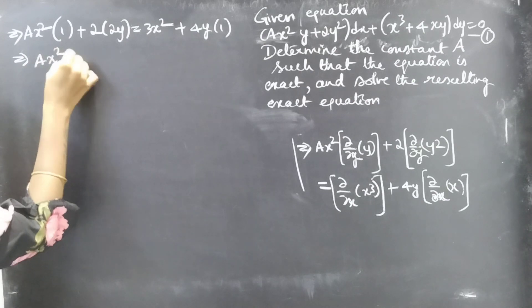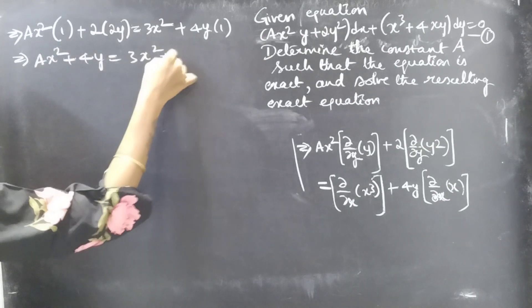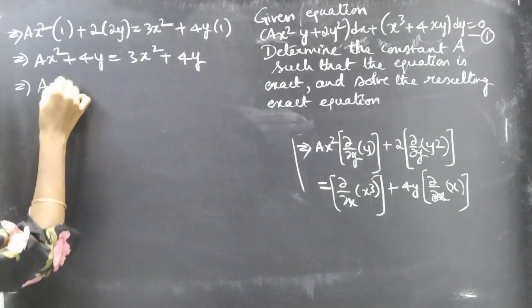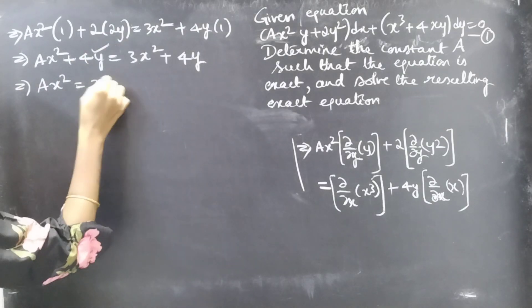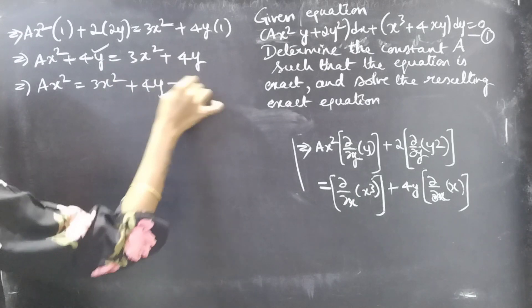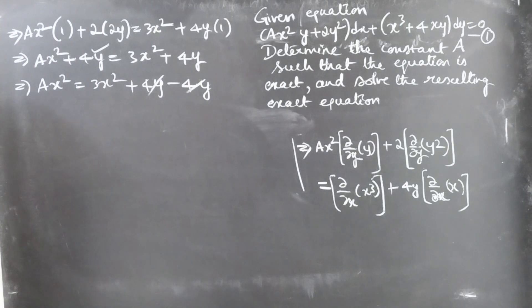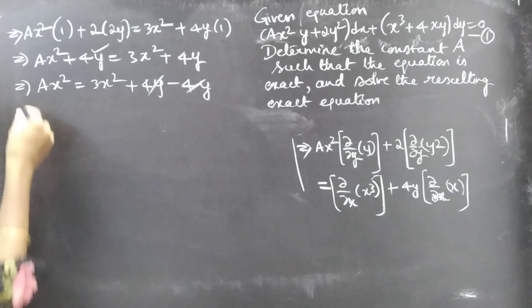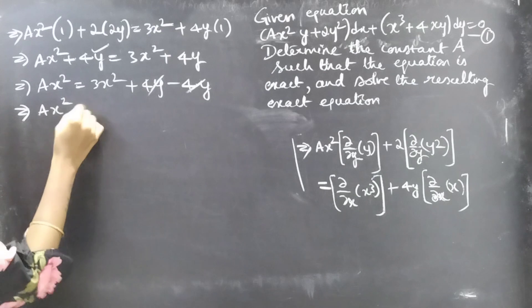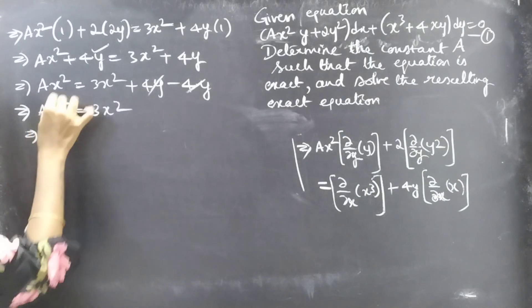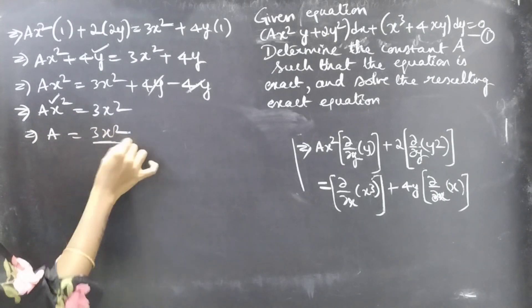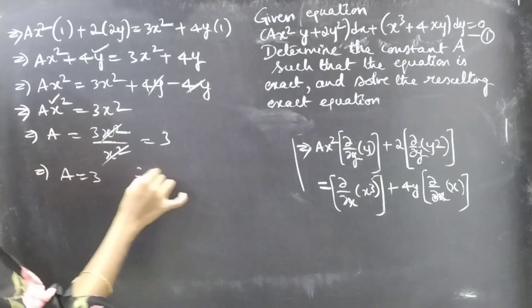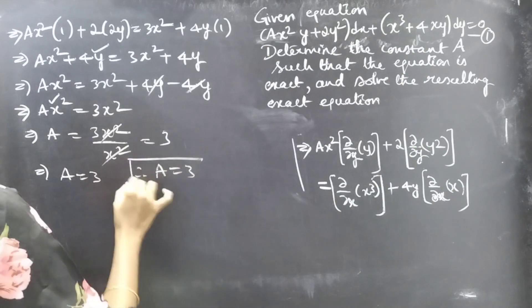This gives us ax² + 4y = 3x² + 4y. The 4y cancels from both sides, and equating the coefficients of x² we get a = 3.